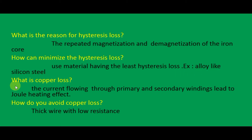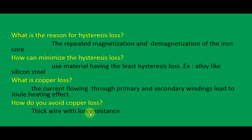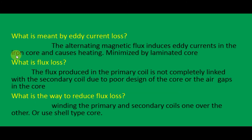What is copper loss? Copper loss means the current flowing through the primary and secondary windings leads to the Joule heating effect. When current passes through the primary and secondary coils, it produces heat — that is called the Joule heating effect. How do you avoid copper loss? We use thick wire with low resistance to avoid copper loss.